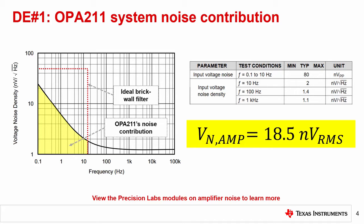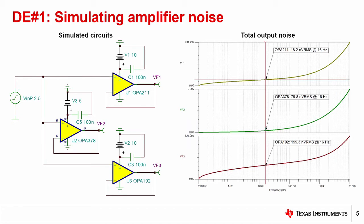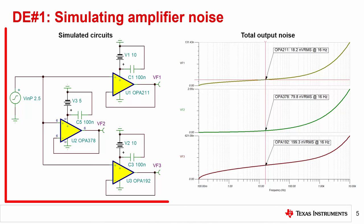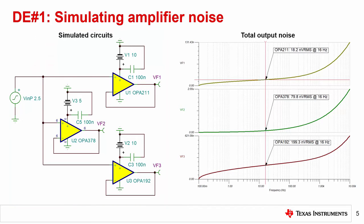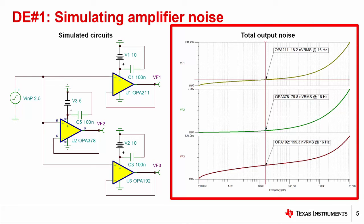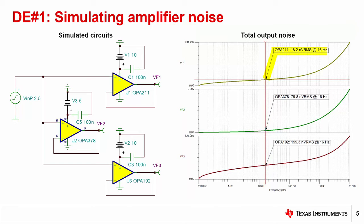To find the noise contribution of the other amplifiers, you can use this same method. Additionally, the next slide shows how you may also corroborate these noise values using simulation. You can set up each component in a buffer configuration using a SPICE simulation tool. All three amplifiers are configured as buffers and connected to the same input source, which is a 500 mV peak-to-peak sine wave with a 2.5 V DC offset. Running a total noise analysis yields RMS voltage noise for each amplifier at 16 Hz, where the OPA211 voltage noise is 18.2 nV RMS, which is very close to the calculated value of 18.5 nV RMS.